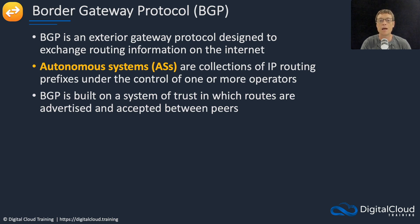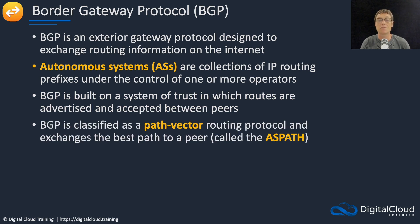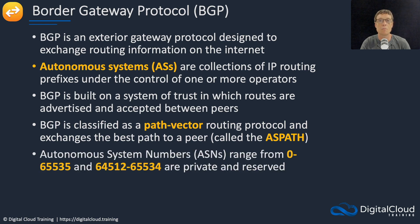That peering can be dynamic, but it's also about trust — you can define which routes you want to accept into your routing tables. BGP is classified as a path vector routing protocol, and it exchanges the best path to a peer, called the AS path. Essentially, it's trying to find the best route to get to a destination, and we'll see shortly some of the details it uses to make those decisions.